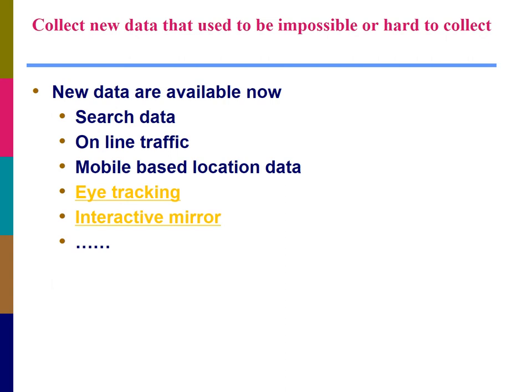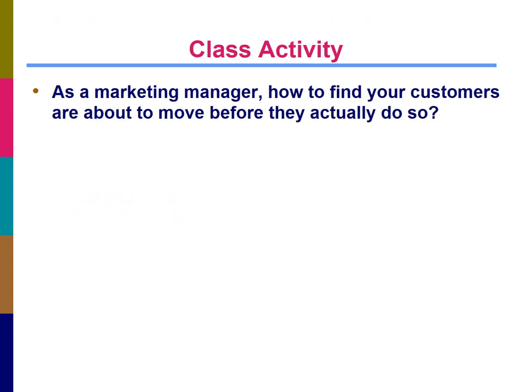Big data also means marketers can collect new data that used to be impossible or hard to collect. New data includes Google search data, online traffic data, mobile-based location data, eye tracking data, and interactive mirror data. You can click the links on this slide to see what eye tracking and interactive mirror data look like. Based on our understanding of big data, here is a question: imagine you are a market manager — how could you find out that your customers are about to move before they actually do so? We can discuss this in the next lecture.